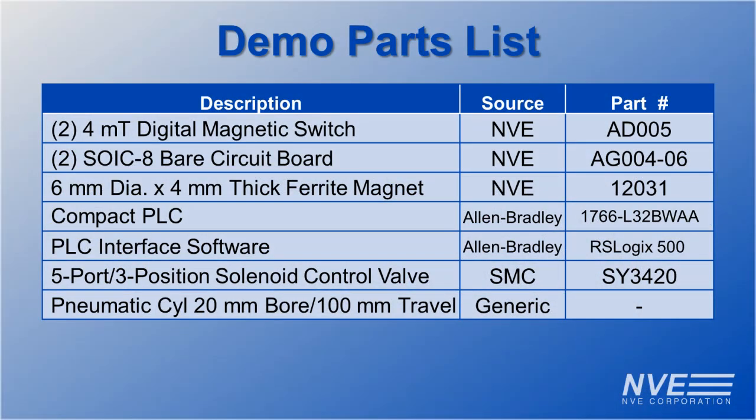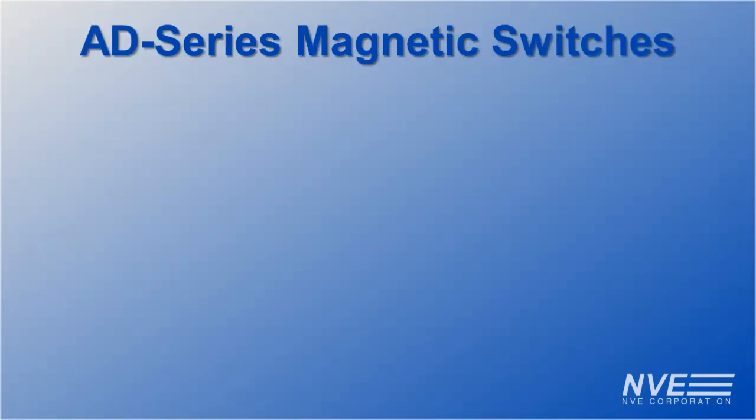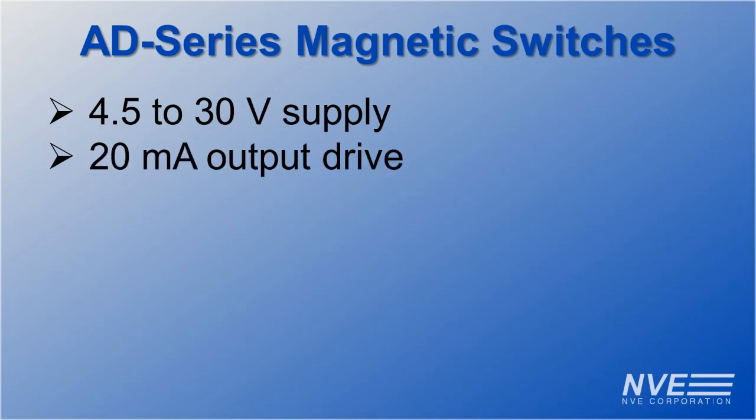Here are the main demo elements. We've seen how AD series magnetic switch sensors are ideal for PLC controls. They have a wide supply range and can sink a full 20 milliamps.